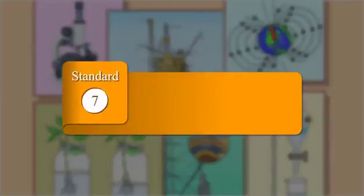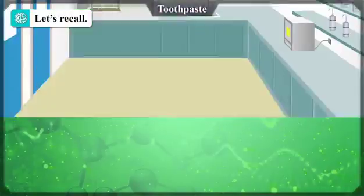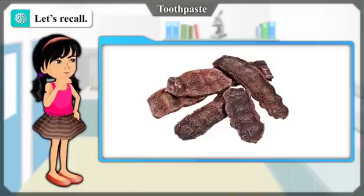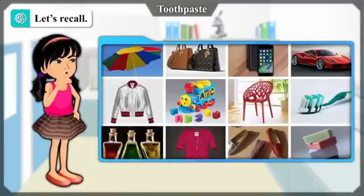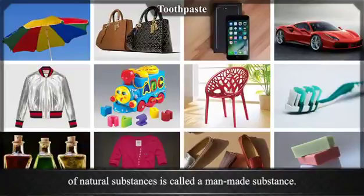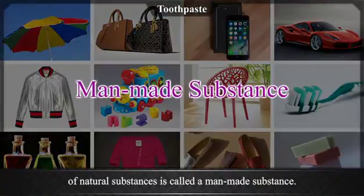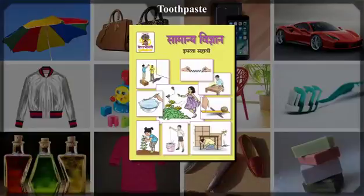Standard 7 General Science, Chapter 15: Materials We Use. Let's recall: What is meant by natural and man-made materials? Make a list of natural and man-made substances you see around you. We have learnt that a new substance produced by the chemical processing of natural substances is called a man-made substance. In this lesson, we will learn about some substances of daily use.